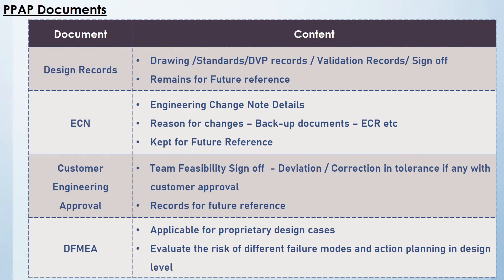We now reach the fourth part: explaining all documents in PPAP. PPAP has 18 documents. The first document is design records, which includes design drawings, standards, DVP records, design verification plans and records, validation records, and sign-off. These all come under the design records category and are kept for future reference.